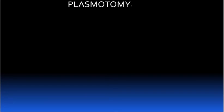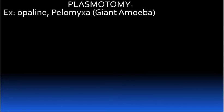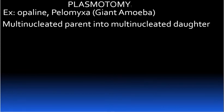Next, we are going to see plasmatomy. Plasmatomy is the division of a multinucleated parent body into many multinucleated daughter individuals without the division of nuclei. Examples are Opalina and Pelomyxa, including the giant amoeba.